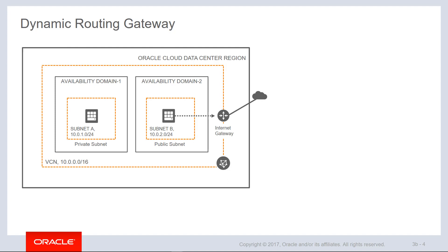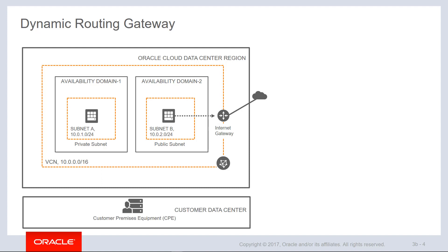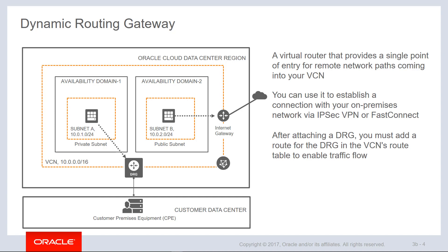Both FastConnect and IPsec VPN take advantage of the dynamic routing gateway that we discussed in the previous module. So if we have our VCN configuration here with our Internet gateway, and we're intending to connect to a customer's on-premises data center, we would simply introduce that dynamic routing gateway and utilize that for connectivity. It's a virtual router that provides a single point of entry for remote network paths coming into your VCN. We would use this to establish a connection with our on-premises network, either using VPN or FastConnect. After attaching the DRG, just remember that we have to add those routes — whatever our on-premises network range includes, we would define that as the target in our route table, with the DRG as the gateway or the connection.